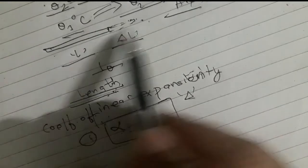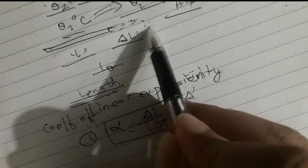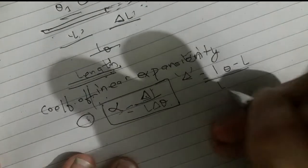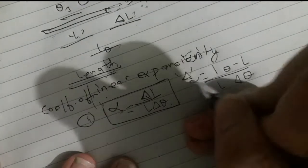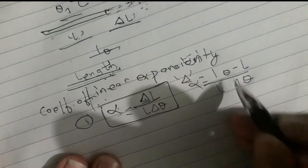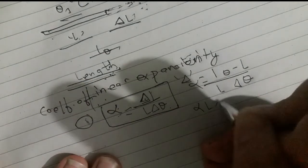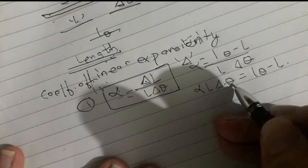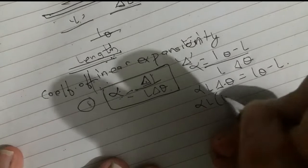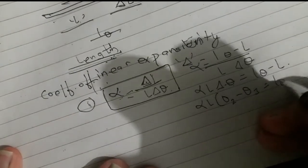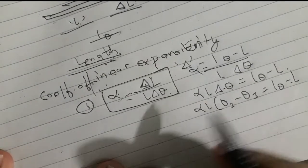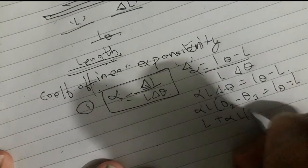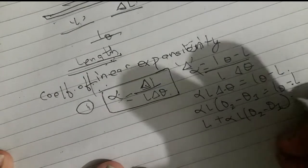Delta L equals L-theta minus L. So the formula becomes: alpha equals (L-theta minus L) divided by L, divided by (theta 2 minus theta 1). Therefore, L-theta equals L plus alpha·L·(theta 2 minus theta 1).